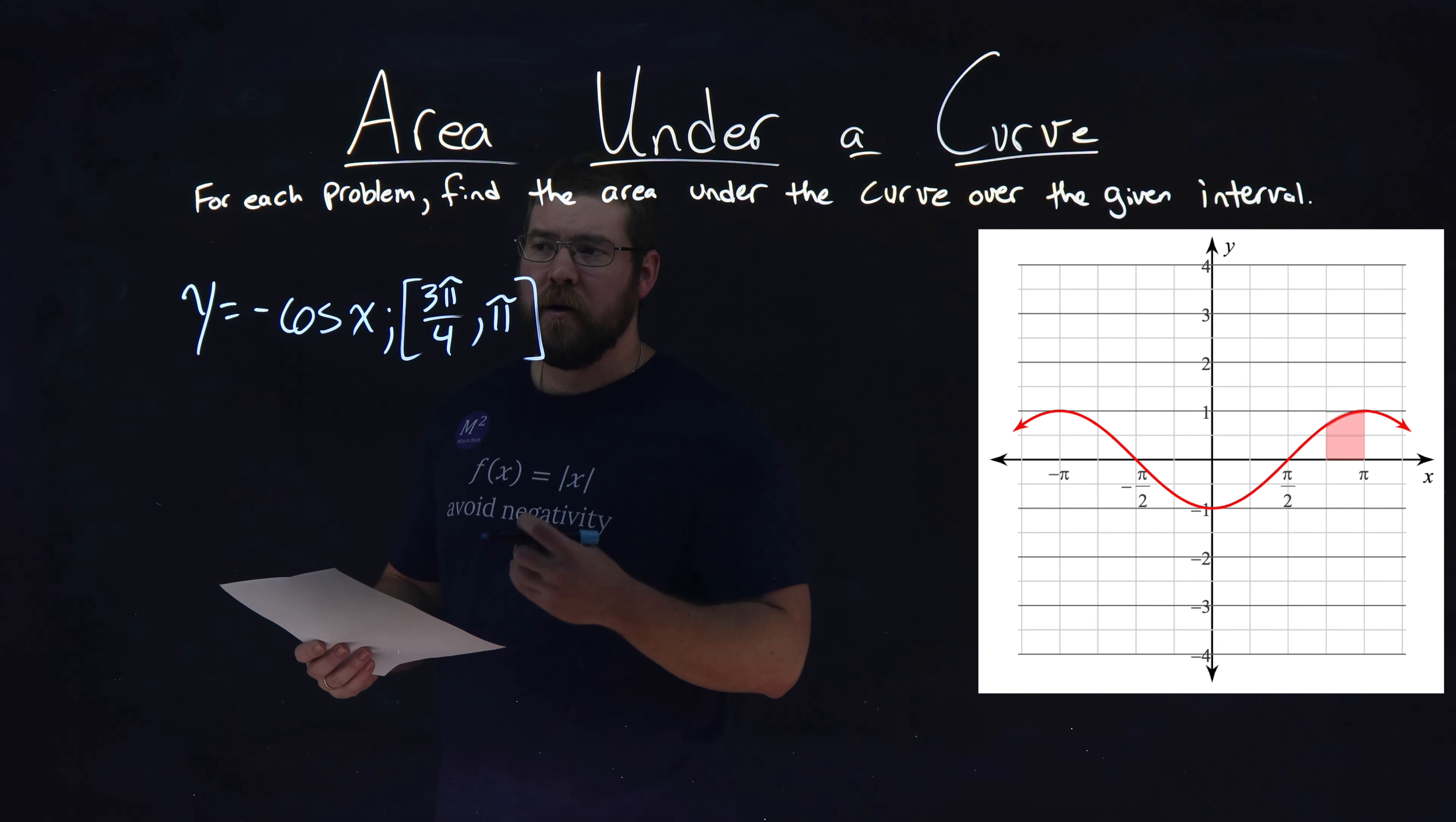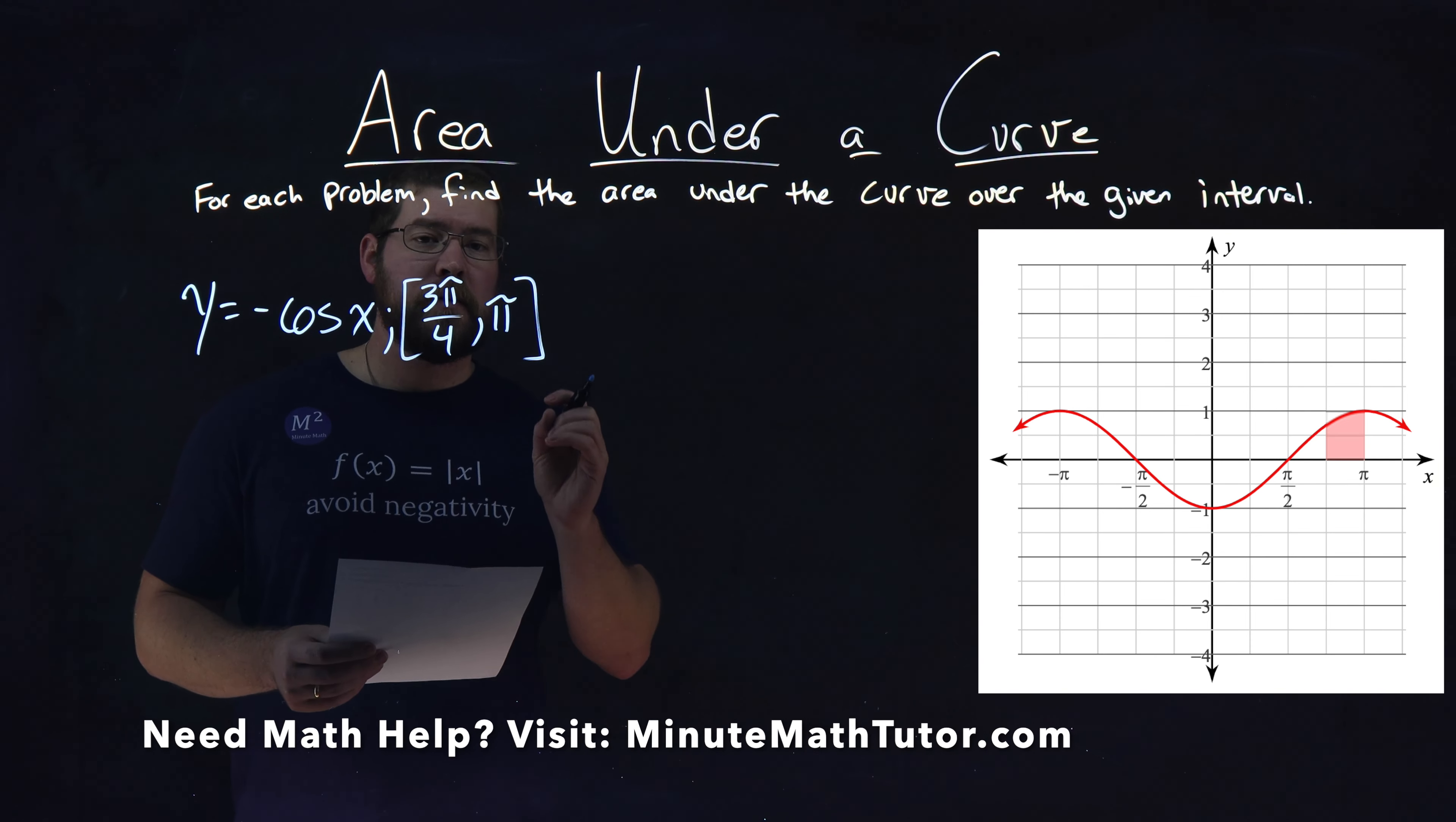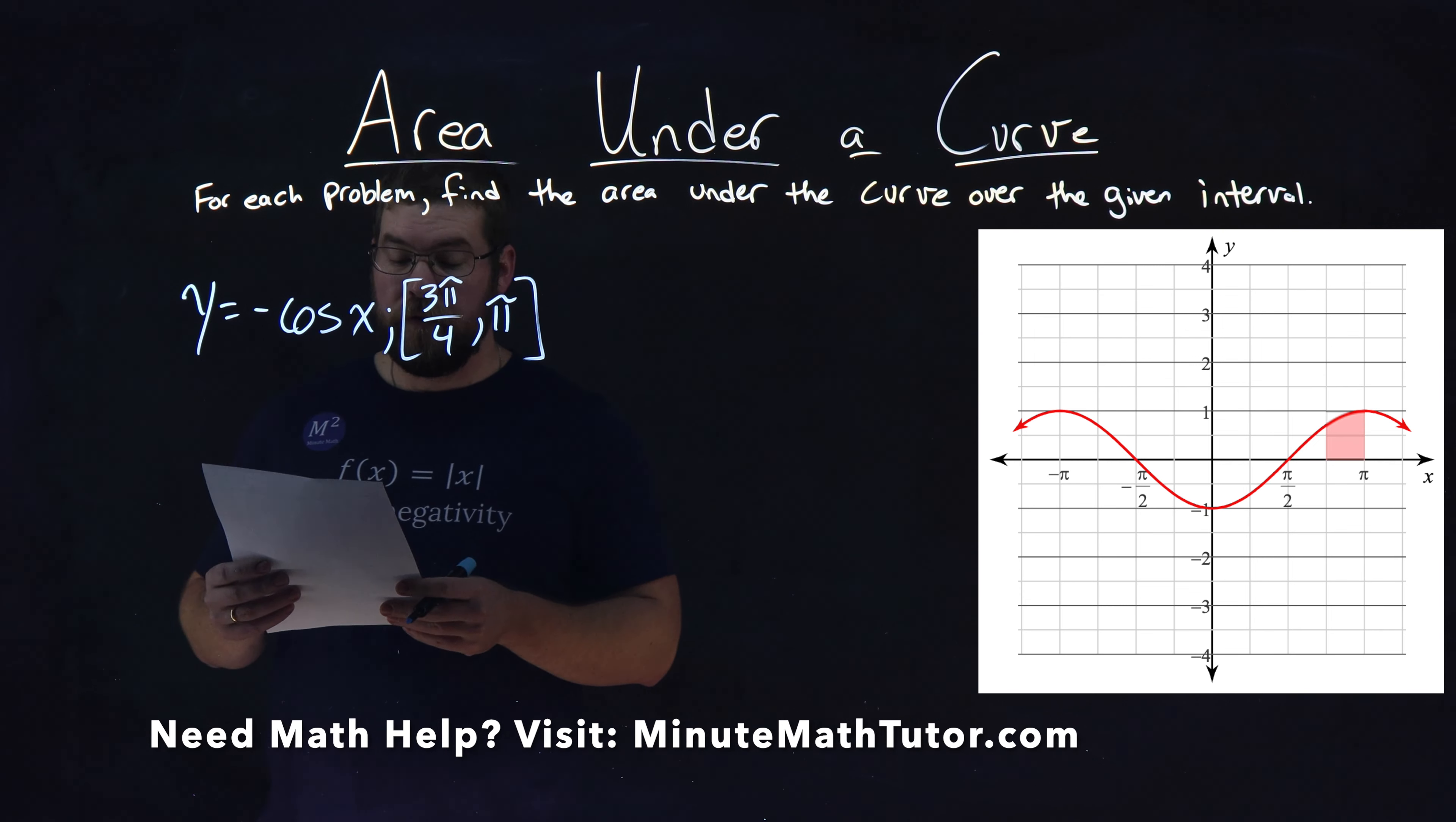We're given this problem right here: y equals negative cosine of x on the interval from 3π over 4 to π, and we need to find the area under the curve over this given interval.